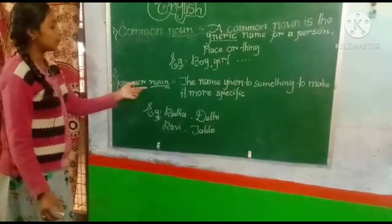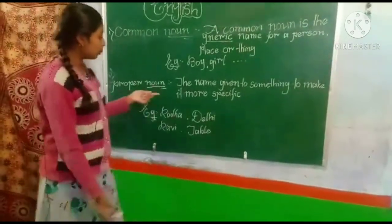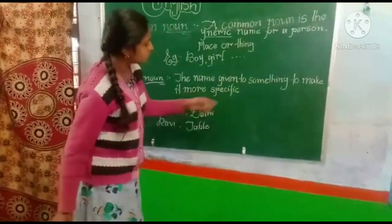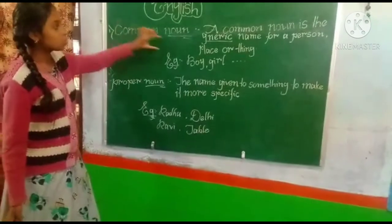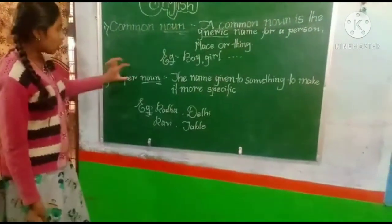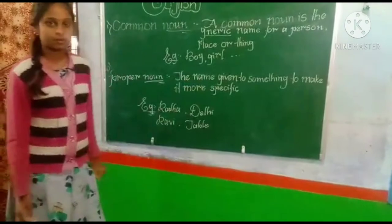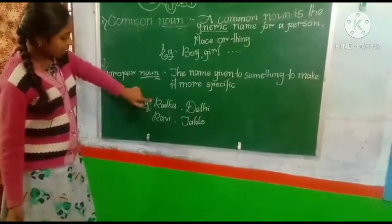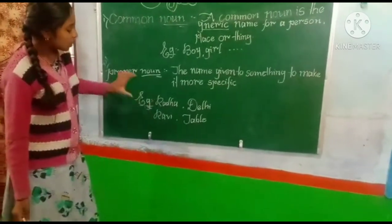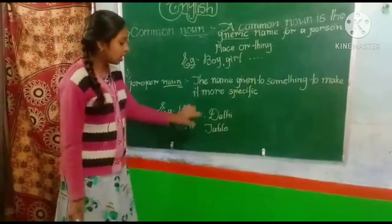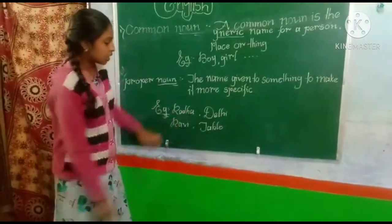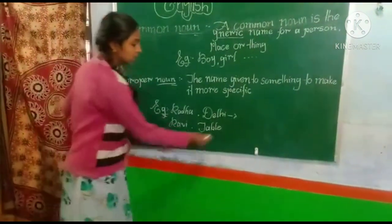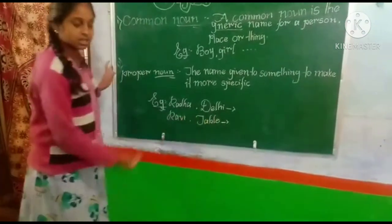The second one is proper noun. A proper noun means the name given to something to make it more specific. Common noun means which is commonly used. Proper noun means which is used very specifically. For example, we take two names — Radha, Ravi. These two names are mainly used specifically. And also a place and a thing — Delhi is a specific place which has one name.